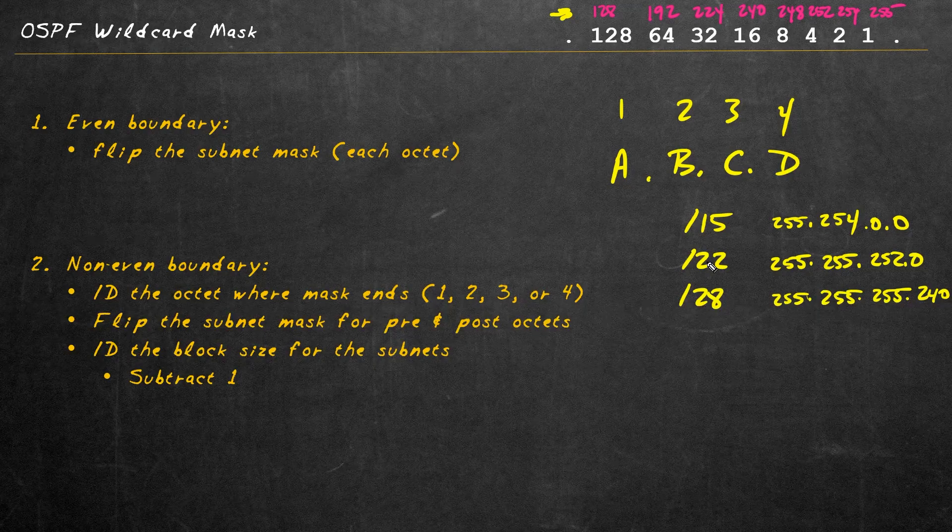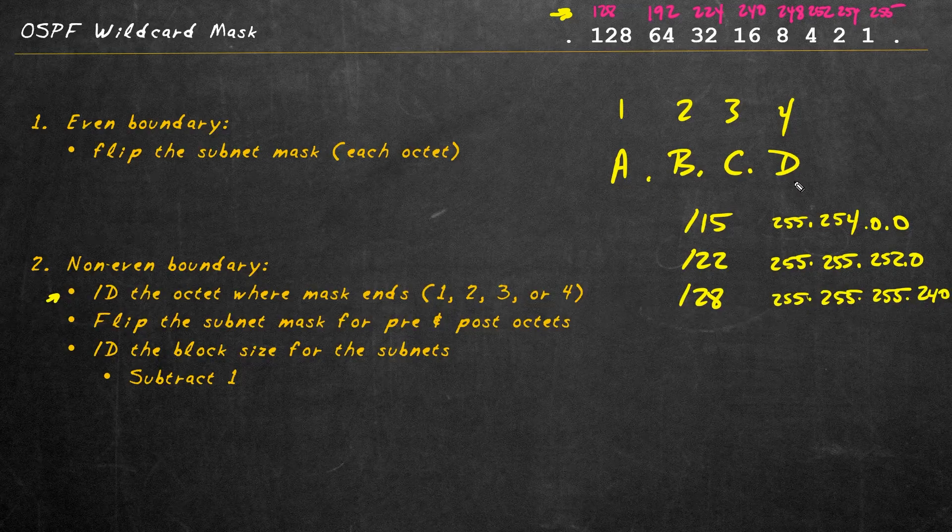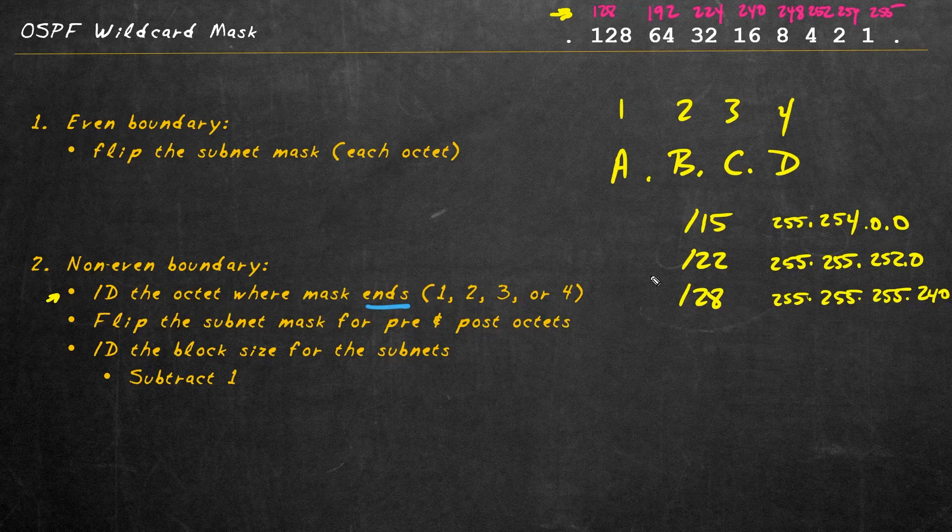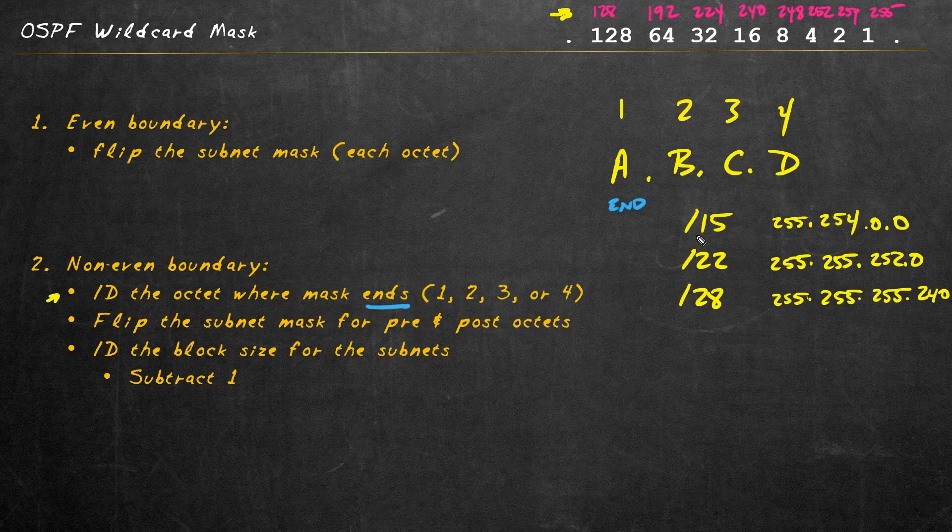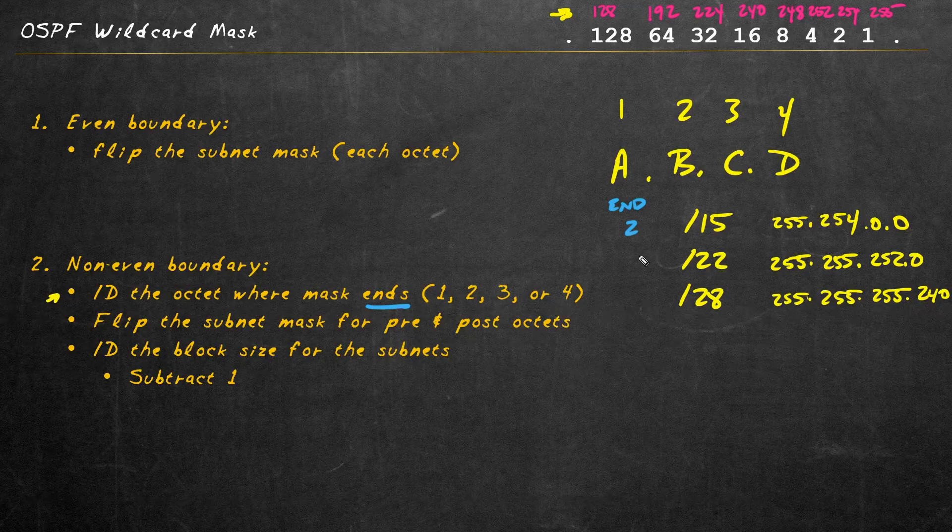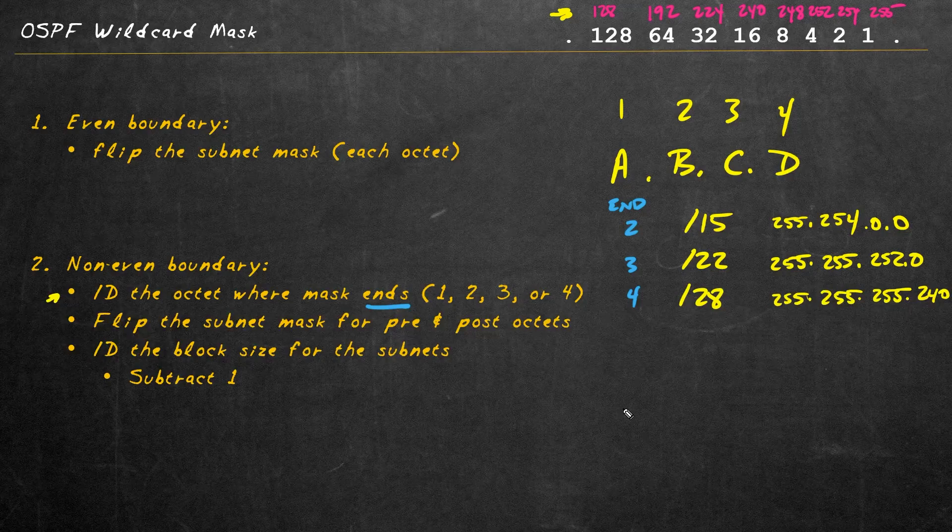So when we have networks like that, what we're going to do is the first step here is to identify the octet where that mask ends. Is it the first octet, second octet, third octet, or fourth octet? Regarding which octet the network portion ends in, I'll label this 'end' right here. For a slash 15, that's in the second octet. A slash 22 is in the third octet. And a slash 28 is in the fourth octet. If you're brand new to IPv4 addressing and subnetting, check out my other videos here on YouTube for IP addressing, including Subnet Saturdays, which will make you a master of it after just those 12 sessions.